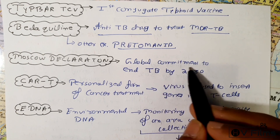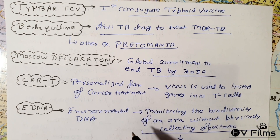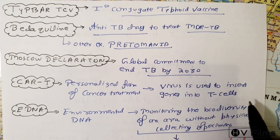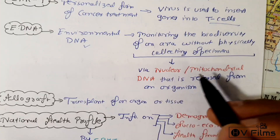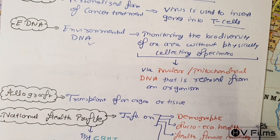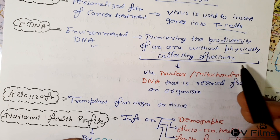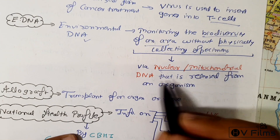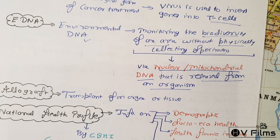CAR-T is a personalized form of cancer treatment where a virus is used to insert genes into T-cells. eDNA, or environmental DNA, enables monitoring of biodiversity in an area without physically collecting specimens. You can access DNA through nuclear and mitochondrial DNA released by organisms into the environment.